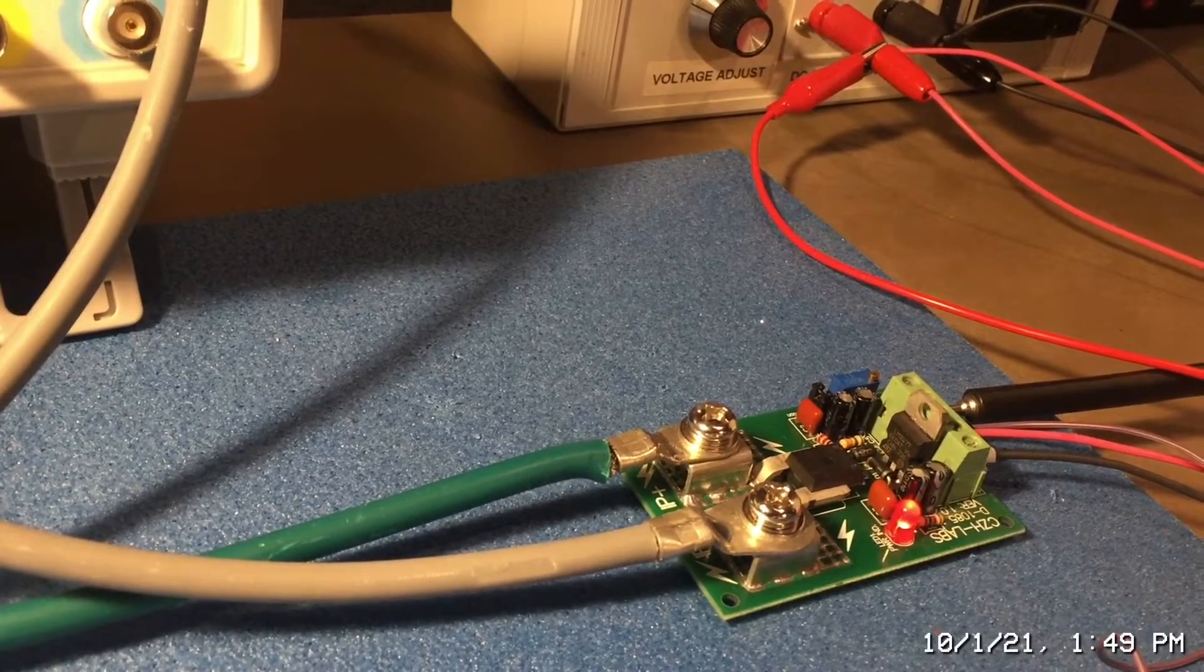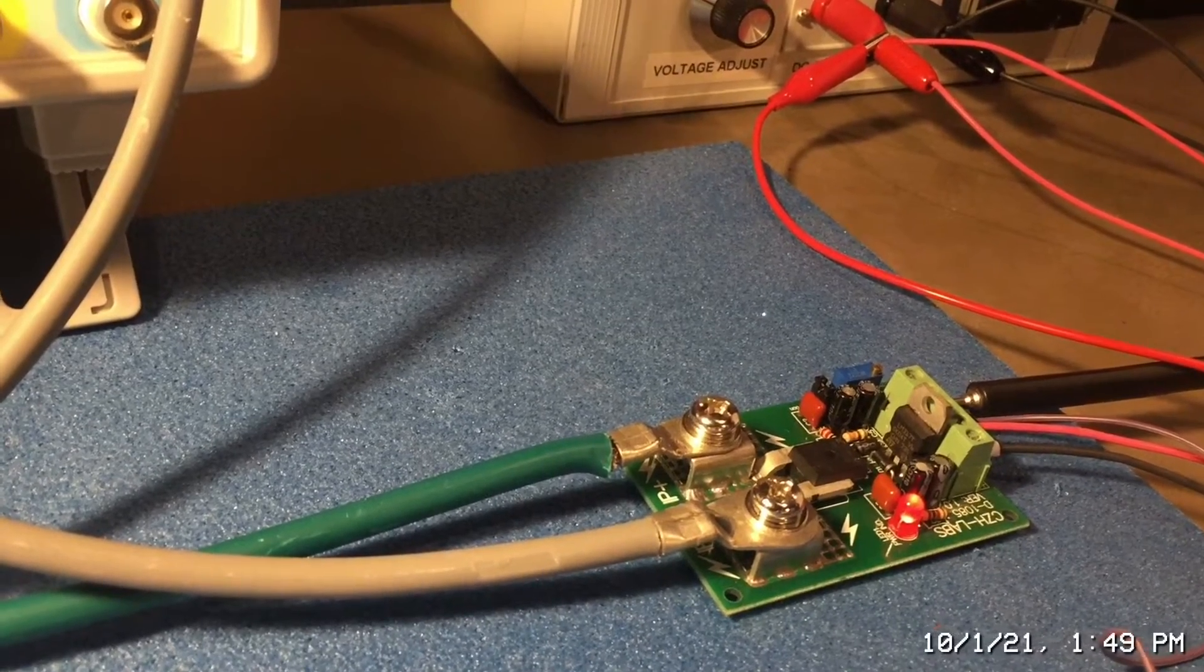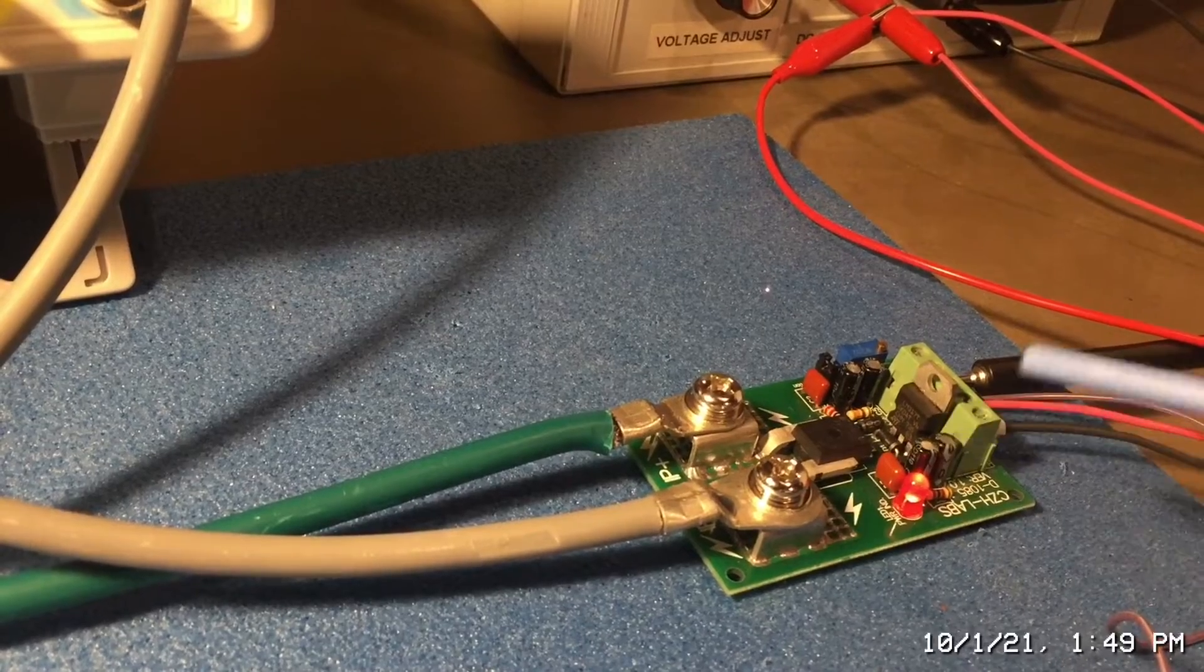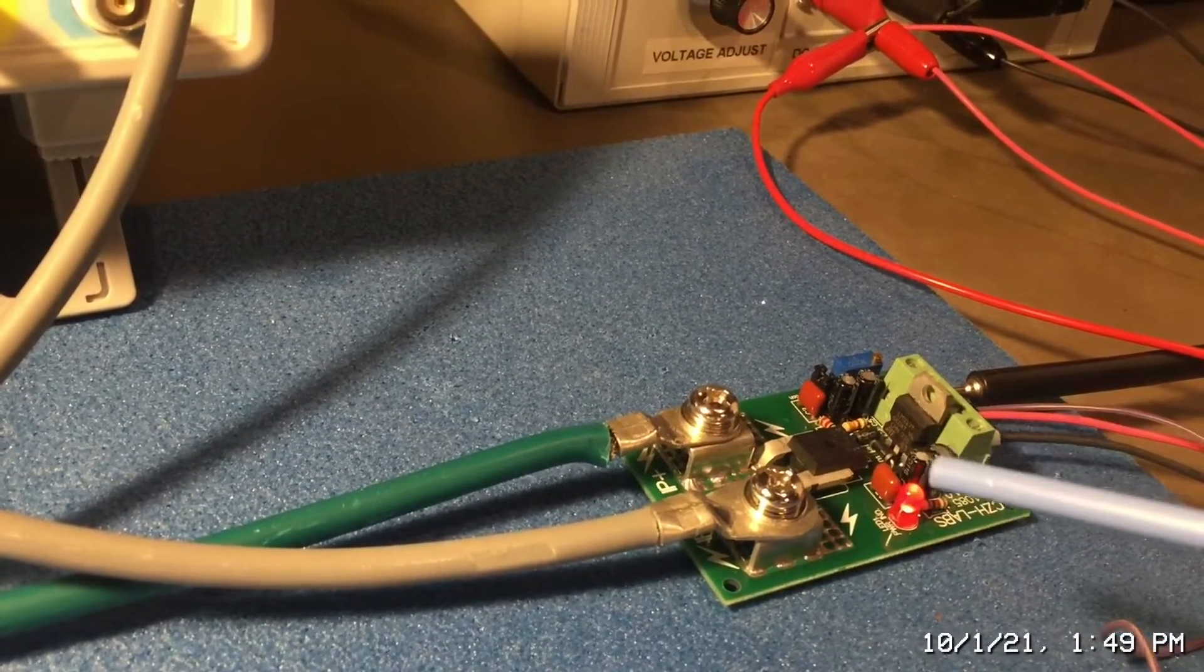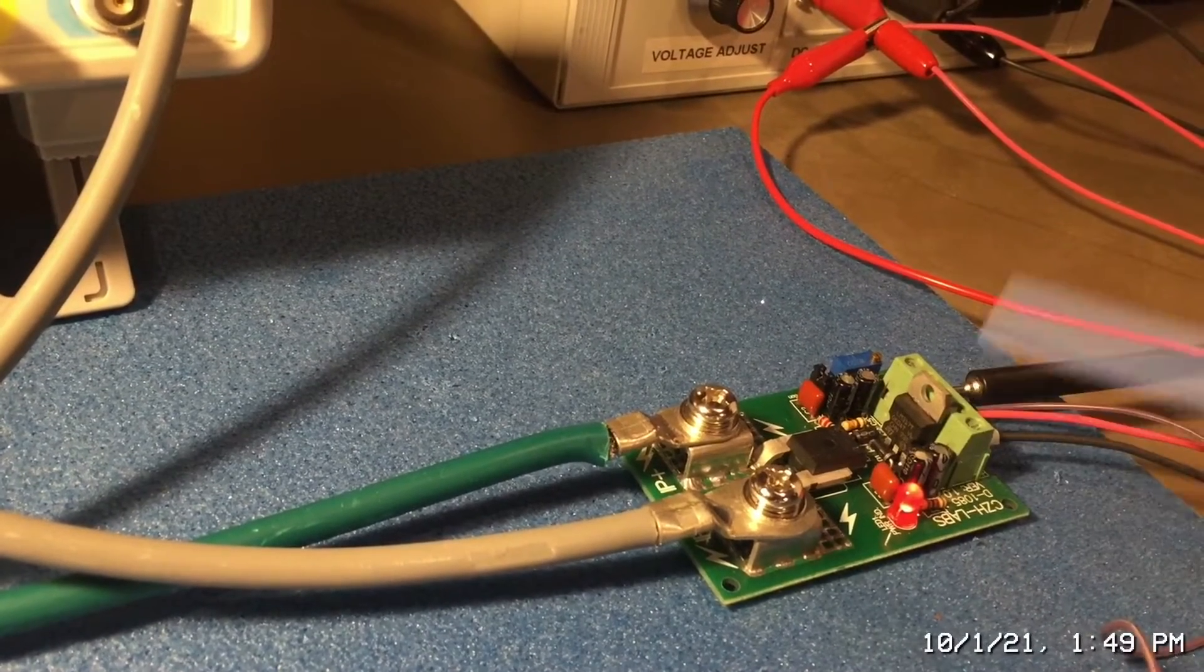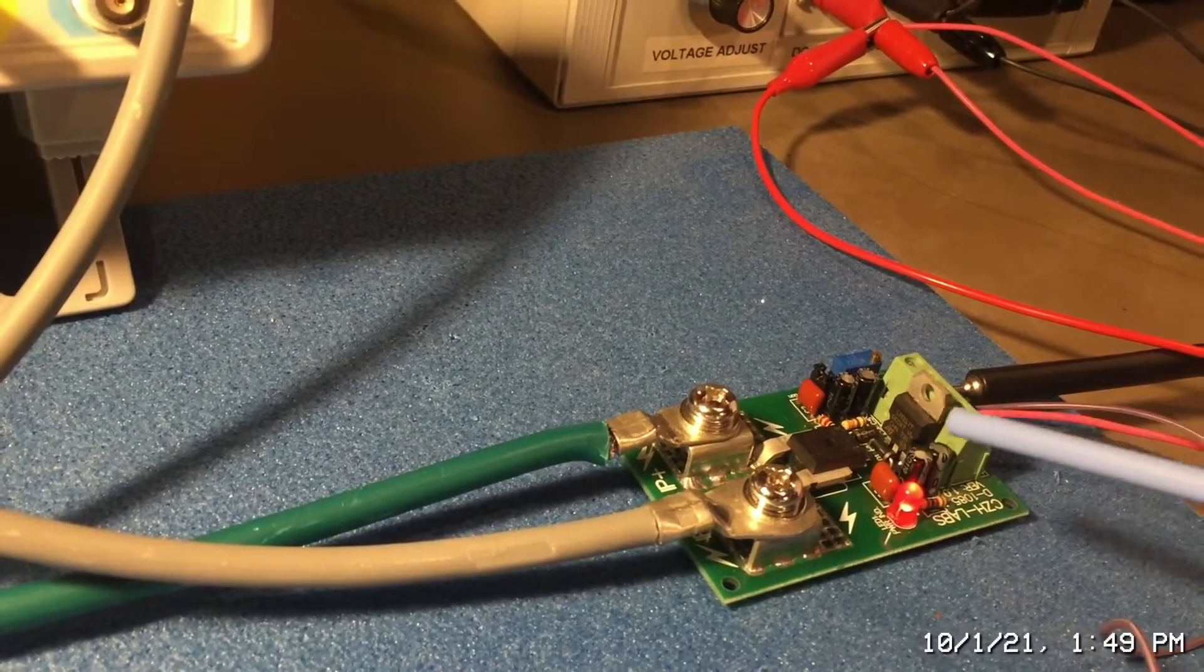RF Mann here. Today I want to talk about different methods for protecting LDMOS transistors that are used in various types of high frequency and very high frequency amplifiers. An example would be the BLF188XR device from Amplion.